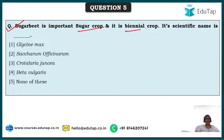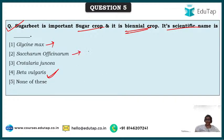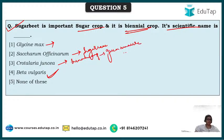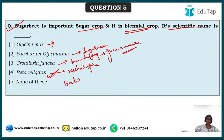Sugar beet is an important sugar crop and a biennial crop. Its scientific name is Beta vulgaris. Beta vulgaris has a variety saccharifera for sugar beet, and variety vulgaris for beetroot — slightly different. Saccharum officinarum is sugarcane. Crotallaria juncea is sun hemp, which is a green manure crop. Sugar beet belongs to family Amaranthaceae, has high concentration of sucrose, and is grown commercially for sugar production.